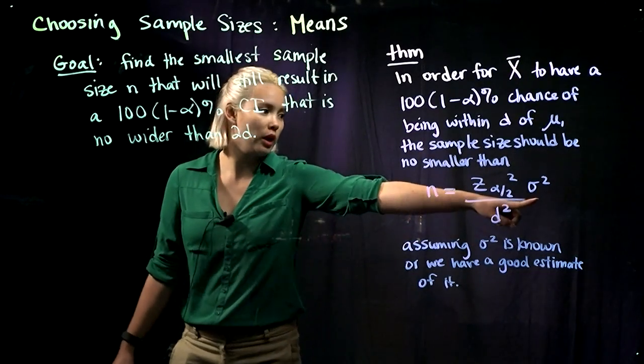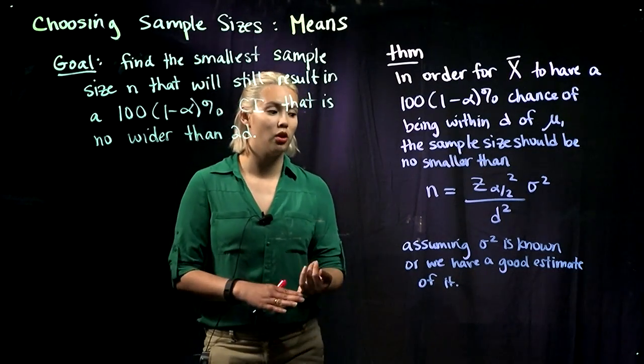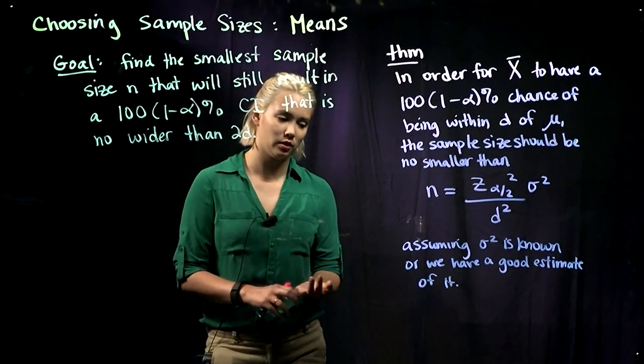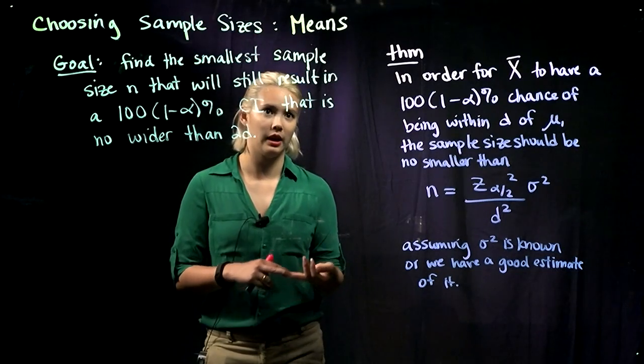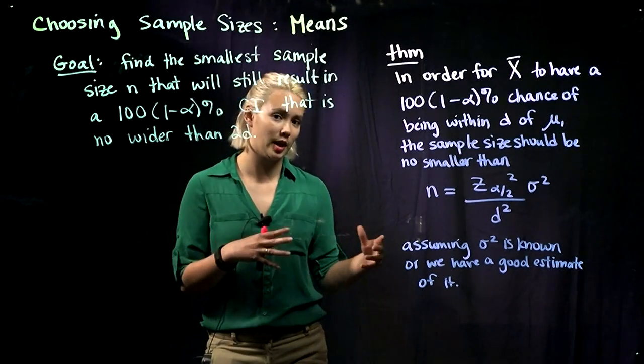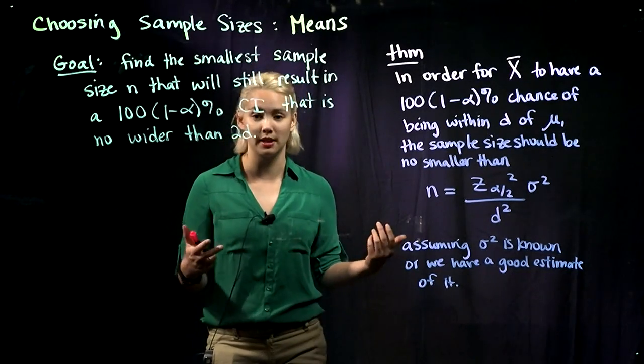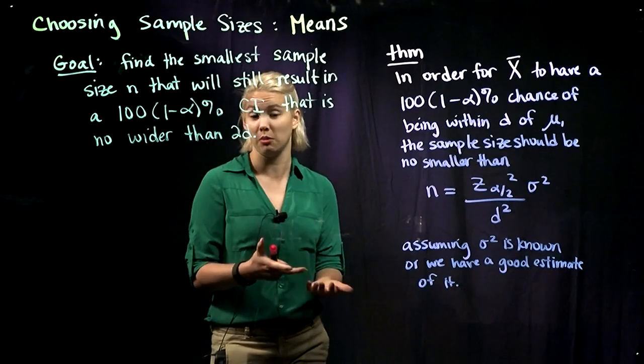As we can see, we have sigma squared over here. So this all assumes that either sigma squared is known or we have a good estimate of it. Maybe we have a similar study like the Hennepin County, Ramsey County setting, or maybe we have a previous study that's like 5 or 10 years old but still could be relevant.